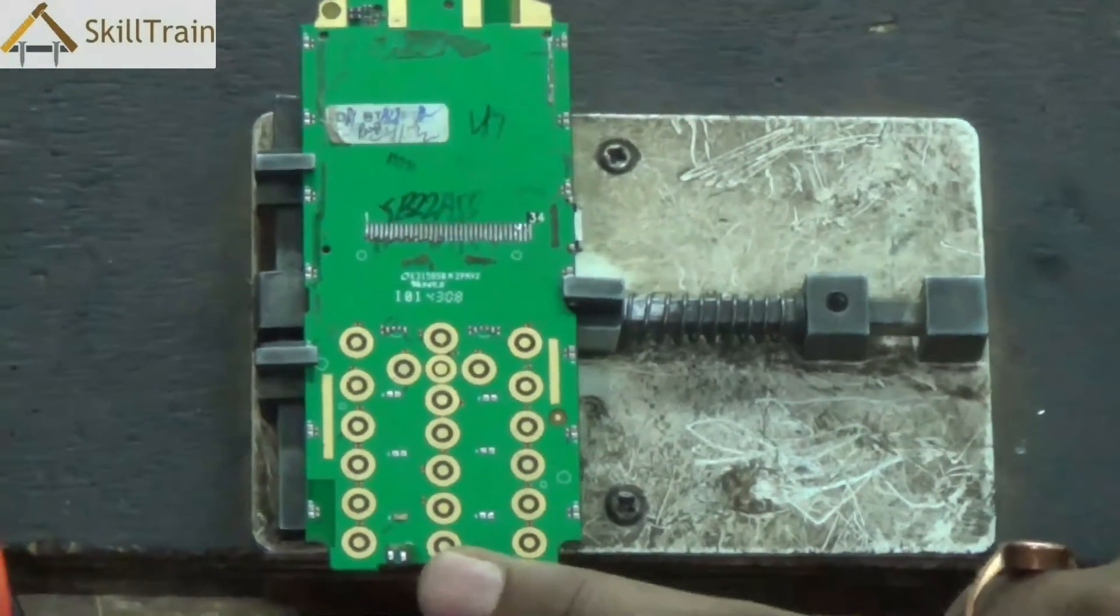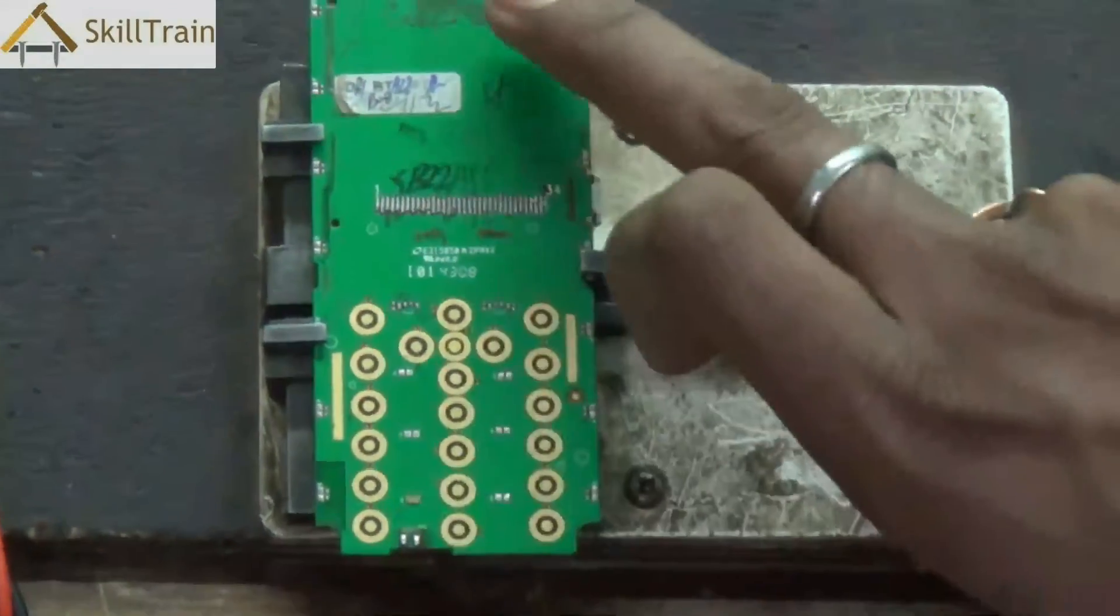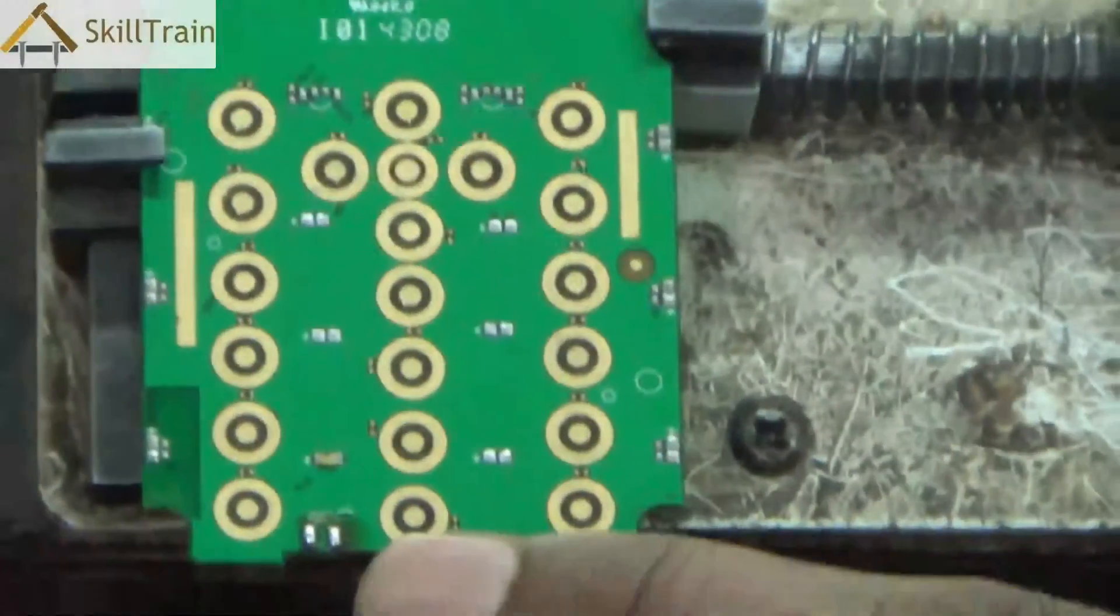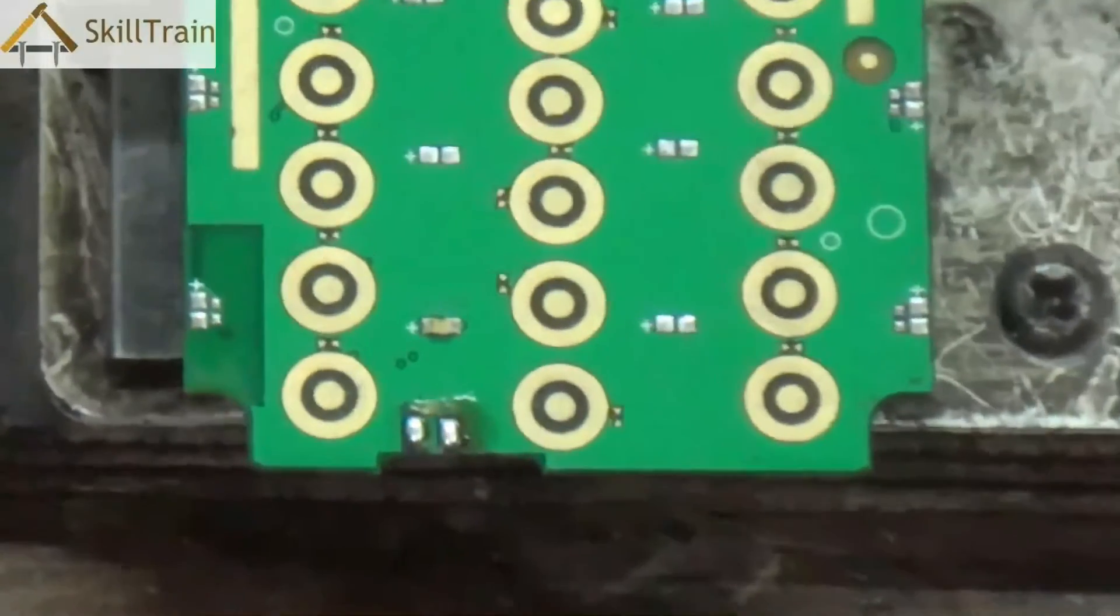In the board, in the bottom if you see there will be two points there. This is called the microphone tip and we have seen it in earlier PCBs also. It's in the bottom portion of the mobile.